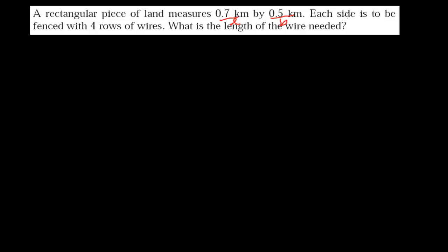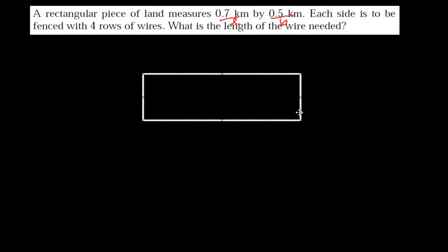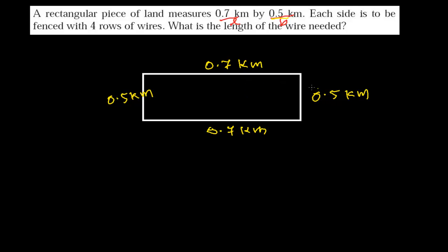So suppose I have a rectangular field something like this. The length of this rectangular field is 0.7 kilometer and the breadth is 0.5 kilometer. Of course this opposite length will also be 0.7 kilometer and this side will again be 0.5 kilometer.